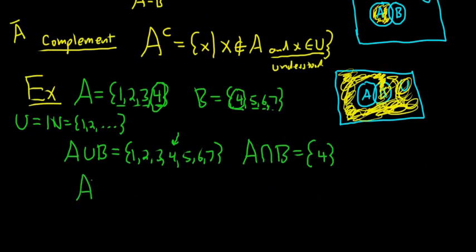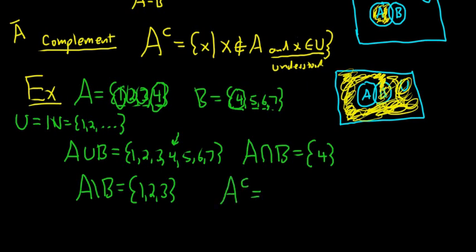A set minus B is all elements in A that are not in B. That would be 1, 2, 3 — these are in A but not in B. So A \ B = {1, 2, 3}. Finally, A complement is everything not in A. A contains 1, 2, 3, 4, so A^c is all the other natural numbers: 5, 6, 7, and so on. That's where we really needed our universe of discourse — it's the rest of the integers.